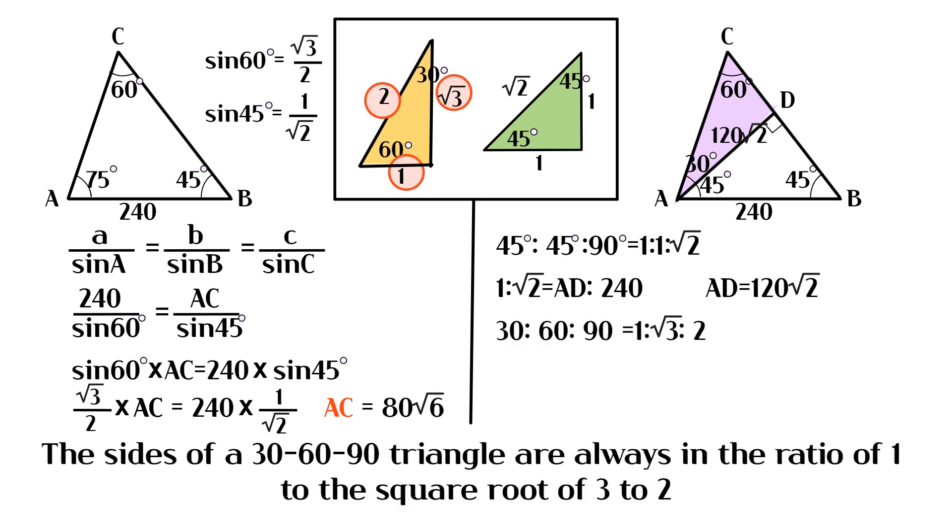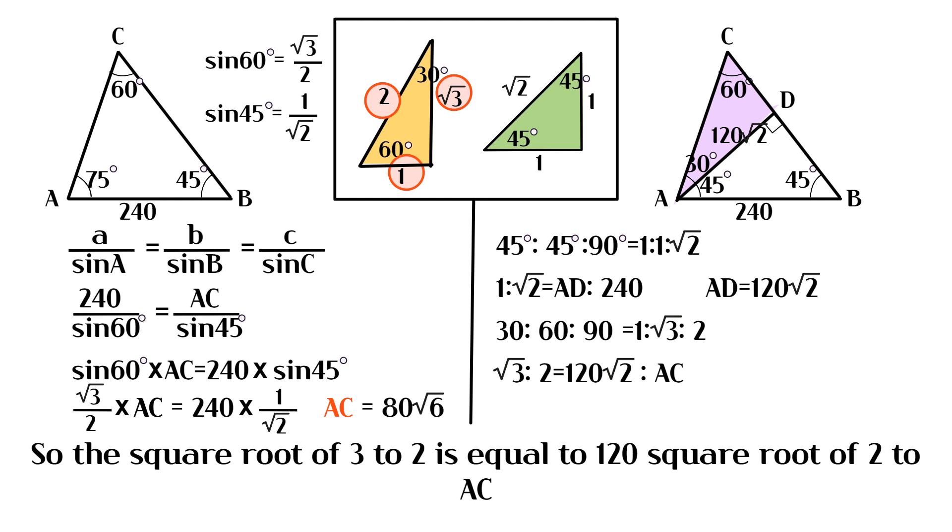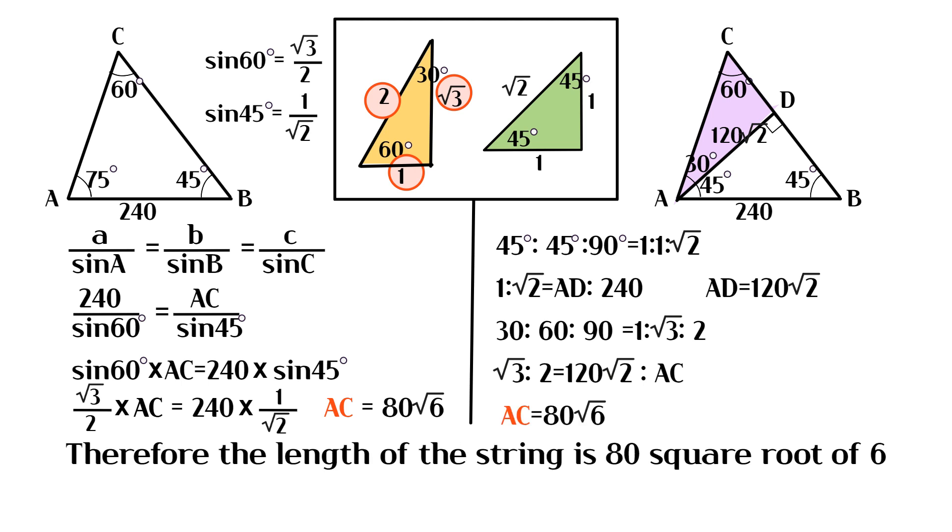The sides of the triangle are always in the ratio of 1 to the square root of 3 to 2. So the square root of 3 to 2 is equal to 120 square root of 2 to AC. Therefore the length of the string is 80 square root of 6.